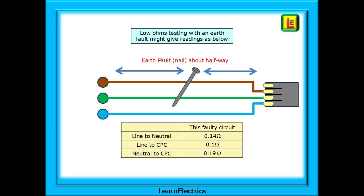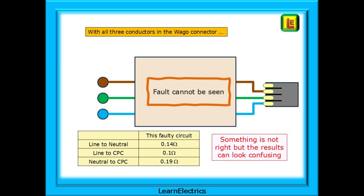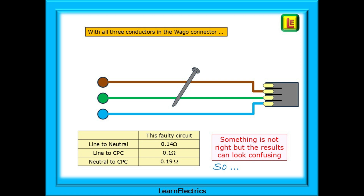Because it involves the earth conductor we call this an earth fault — or at least we should do in assessments and exams. What readings would a low ohms test on this circuit show? As you can see from the table, the readings are nothing like those for the good circuit and they don't appear to make sense. But if you didn't know what the fault was or where it was, how would we go about finding it? If we low ohms resistance test the circuit it's obvious that something is not right, but the results can look confusing. Part of this is because we still have all three conductors linked together in the Wago — we need to take a step back and find some clarity.